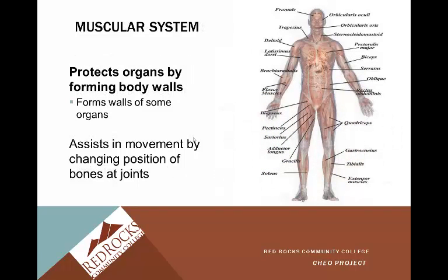The muscular system protects the organs by forming body walls and the walls of some organs — some organs are also muscular. It assists in movement by changing the position of bones at the joints. You'll see the picture schematic here. When you get into anatomy and physiology, you'll go into a lot more depth in terms of all the muscles in the body. The key purpose is assisting in movement and also protection.